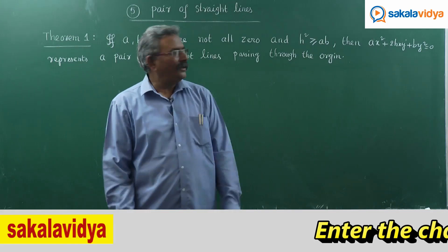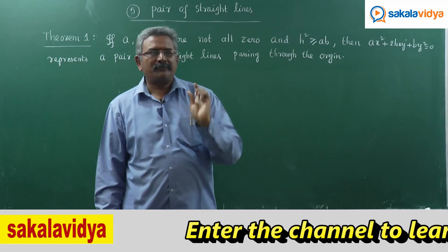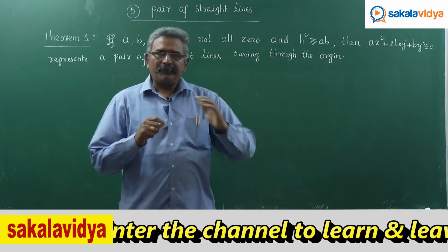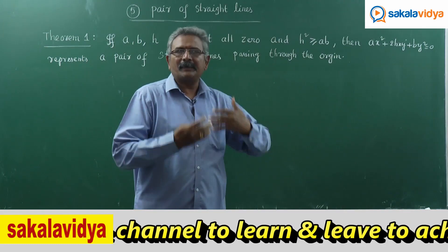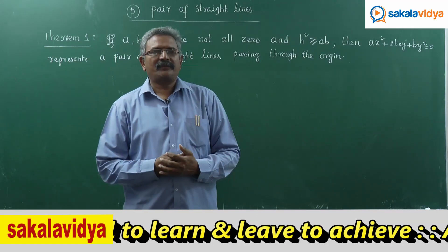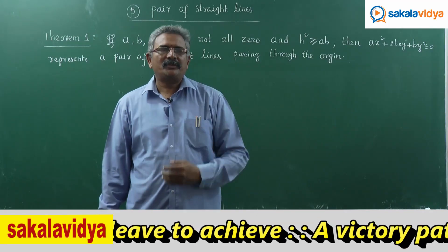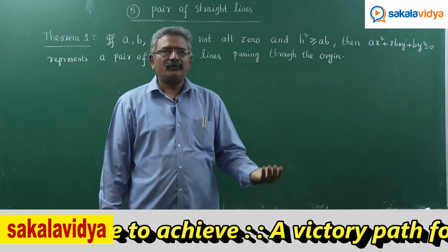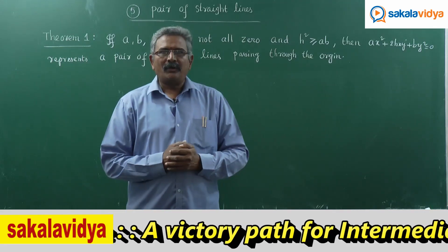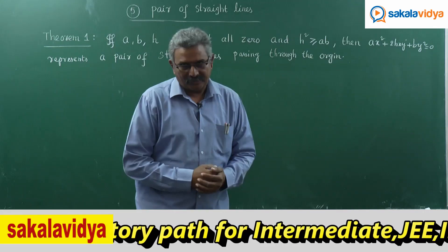That means ax squared plus 2hxy plus by squared equals 0 represents two individual equations: y minus m1x equals 0 and y minus m2x equals 0. Let us now prove this theorem.